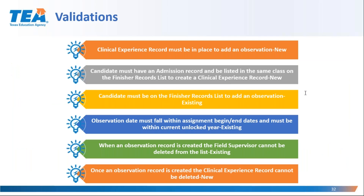There are some safeguards — validations — built into ECOS that you need to be aware of when working with clinical experience records and observation records; some are existing and some are new with this update. A clinical experience record must exist before an observation can be added for the candidate. To create the clinical experience record, the candidate must have an admission record with your EPP. If you created the admission record, by default the candidate will have the enrollment record on the finisher records list as required. The records must reflect the same class of certificate pursued — such as teacher, principal, or superintendent — otherwise you will receive errors. This feature helps keep records clean and accurate.